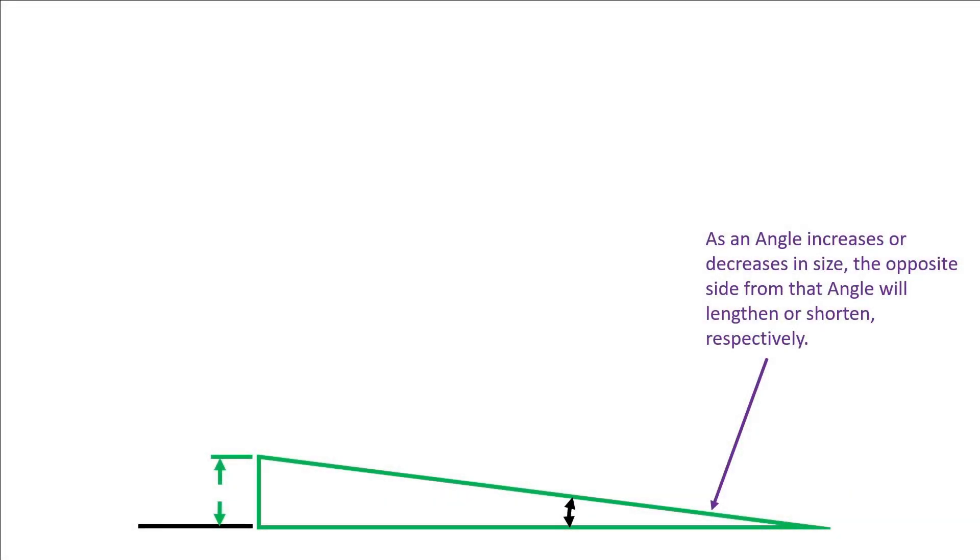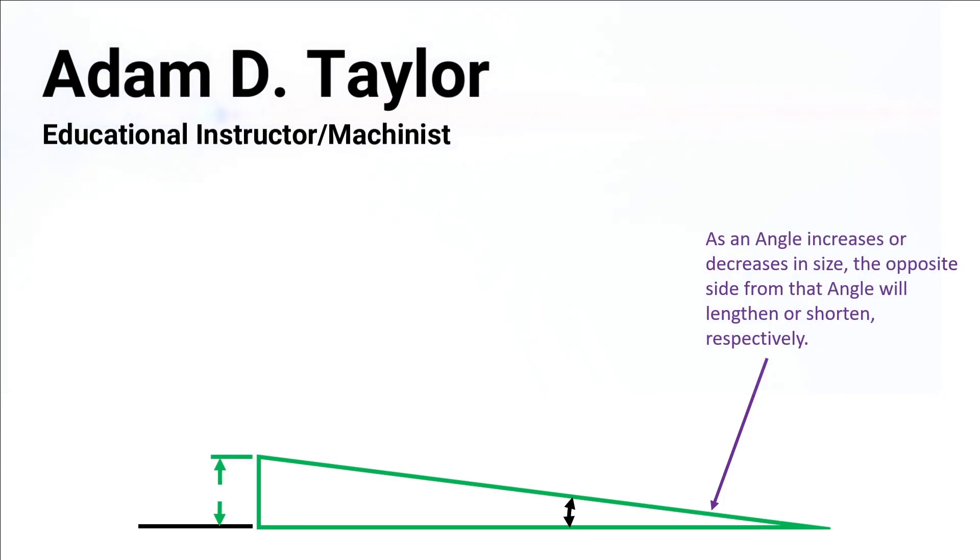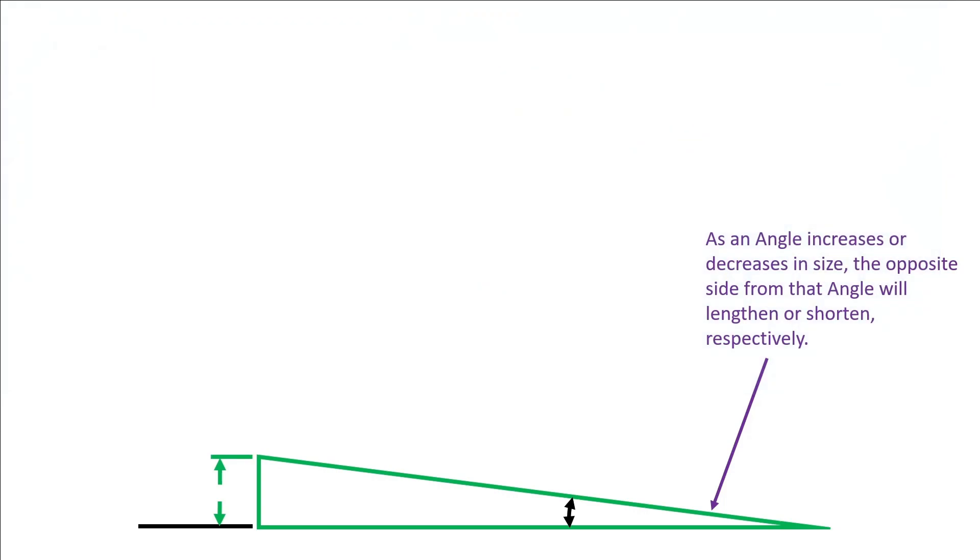One of the first things that we need to understand in trigonometry is how an angle affects an opposite side. As an angle increases or decreases in size, the opposite side from that angle will lengthen or shorten, respectively, as we can see here in the demonstration.